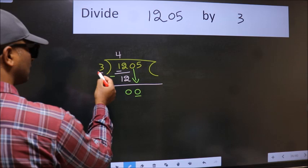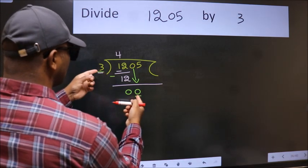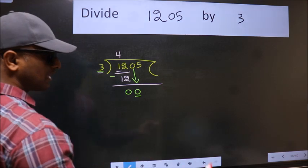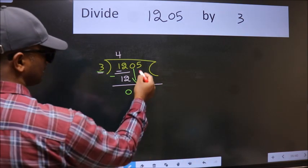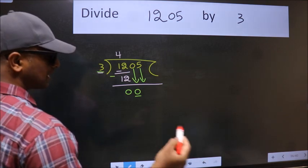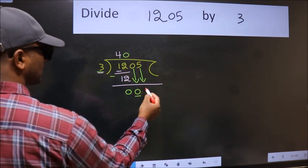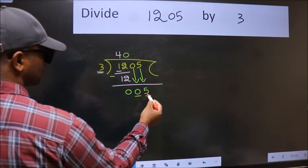Now, here we have 0 and here 3. 0 is smaller than 3. So, we should bring down the second number. And the rule to bring down the second number is put 0 here. Then only we can bring this number down. So, 5.